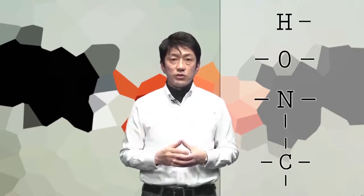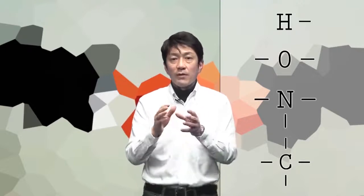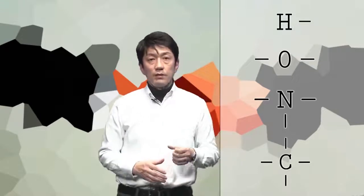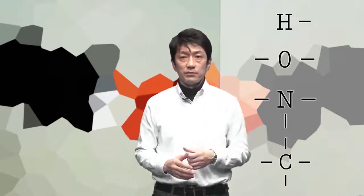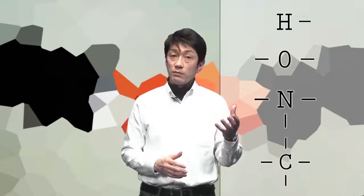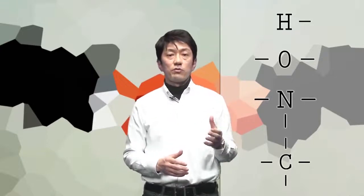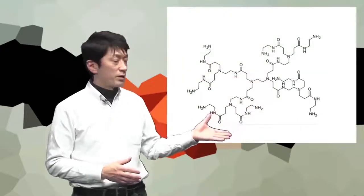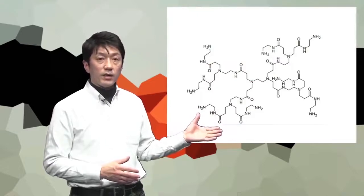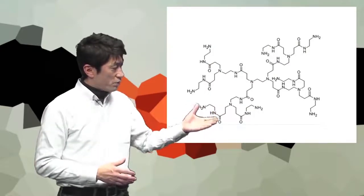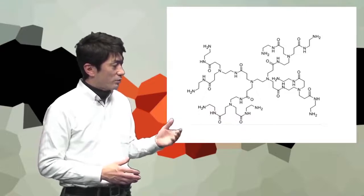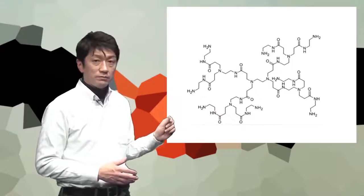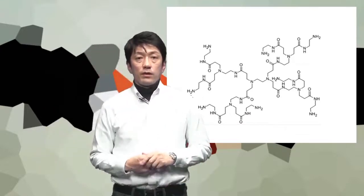Some combinations create small compounds, while others create large ones. Unless C is present, compounds will be very small. When the numbers of C and N atoms are high, more complex compounds can be produced. Let me show you one compound here — it's pretty complicated, but it has a lot of C and N.